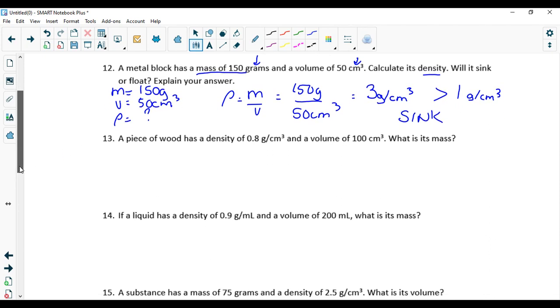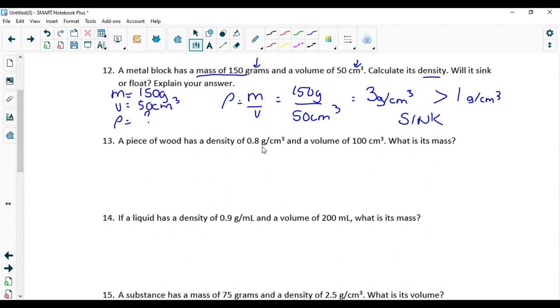Next, number 13. A piece of wood has a density of 0.8 grams per centimeter cube, so I'm going to go ahead and write again all my information. This time my density is given, 0.8 grams per centimeter cube, and a volume of 100 centimeter cube. What is the mass? We'll write our formula.